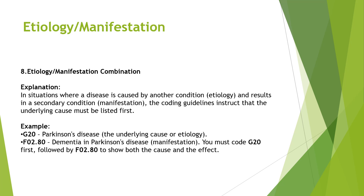Next, etiology and manifestation. A disease caused by another condition is the etiology, and the secondary condition it produces is the manifestation. The coding guideline instructs that the underlying cause must be coded first. For example, G20 Parkinson's disease is the etiology, and F02.80 dementia in Parkinson's disease is the manifestation. Per guidelines, G20 must be coded first, followed by F02.80, to show both cause and effect.